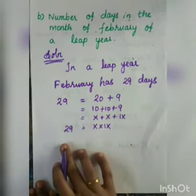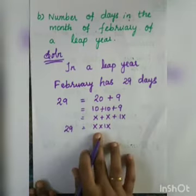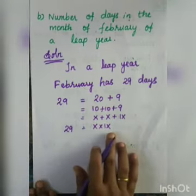So the number of days in the month of February of a leap year is 29 days, and the Roman numeral is XXIX.